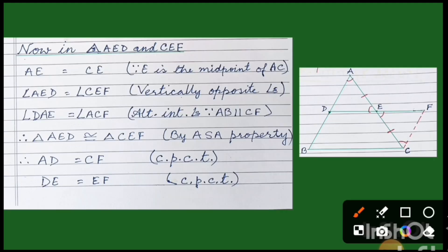Now in triangles AED and CEF: AE is equal to CE because E is the midpoint of AC. Angle AED is equal to angle CEF because these are vertically opposite angles. To know about vertically opposite angles and alternate interior angles, you will learn about two parallel lines and their transversal — I shall try to teach you in the next video about this in detail.